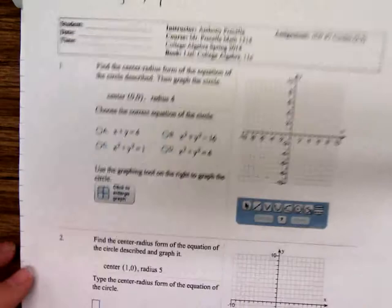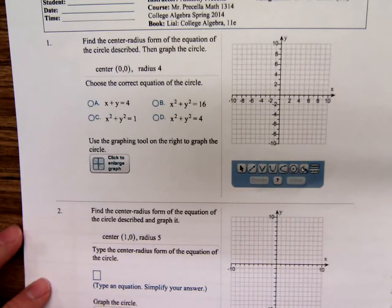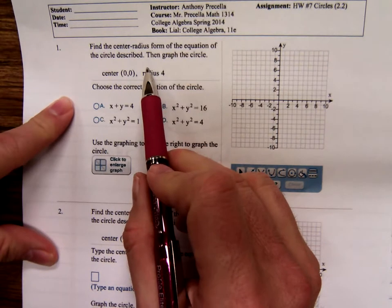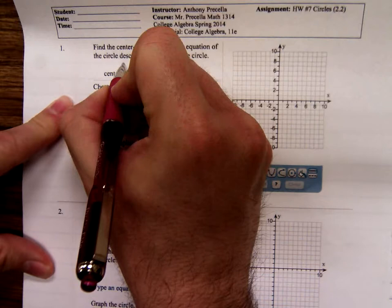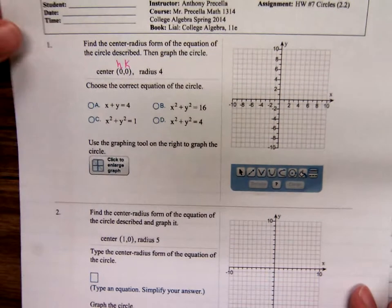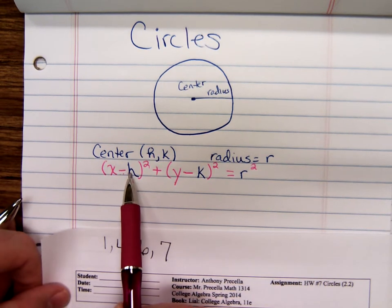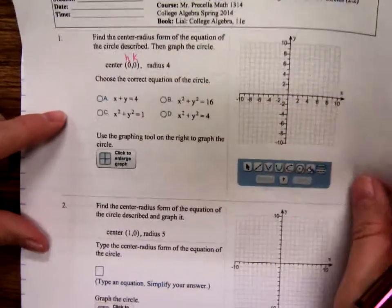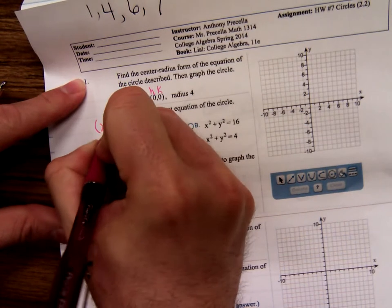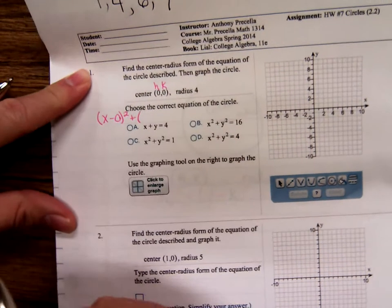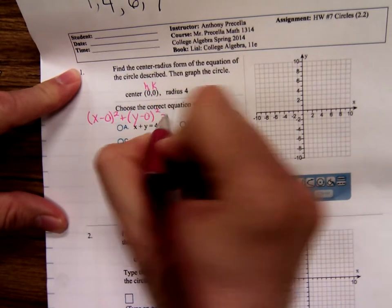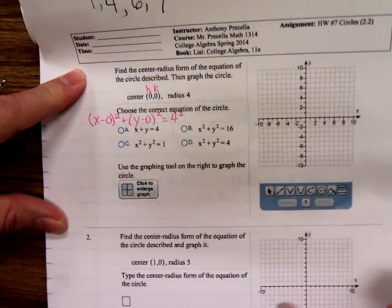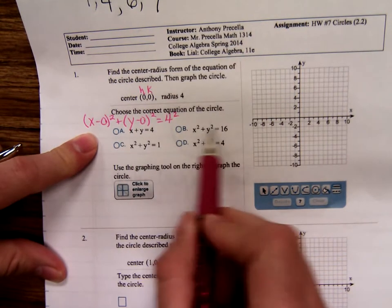Here's a homework problem we're going to do. Number one. It says find the center and radius form of the equation of the circle and then graph it. Well, if this is your h and your k, can y'all imagine going through and plugging a zero in for h and a zero in for k? If you plug a zero in for h and a zero in for k, you're going to have something like this: x minus zero squared plus y minus zero squared equals, now the radius is four, four squared. Which one of those would this simplify down to? It would be this one right here.